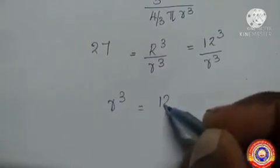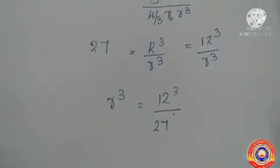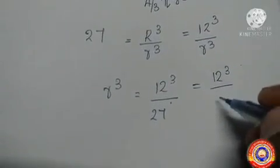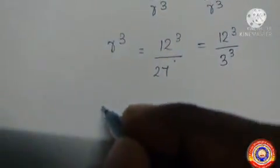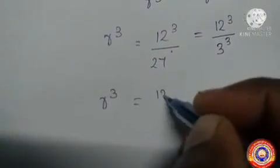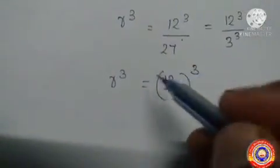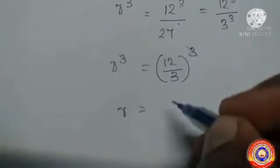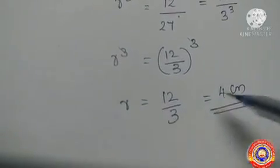The radius of the large metal sphere is equal to 12 cm. We have to find the radius of the small sphere. So, r³ is equal to 12³ divided by 27, and this can be written as 12³ divided by 3³, since 27 equals 3³. So r³ is equal to (12/3)³. Cancelling the power 3 from both sides, we get r equal to 12/3, which is equal to 4 cm. The radius of the small sphere is equal to 4 cm.